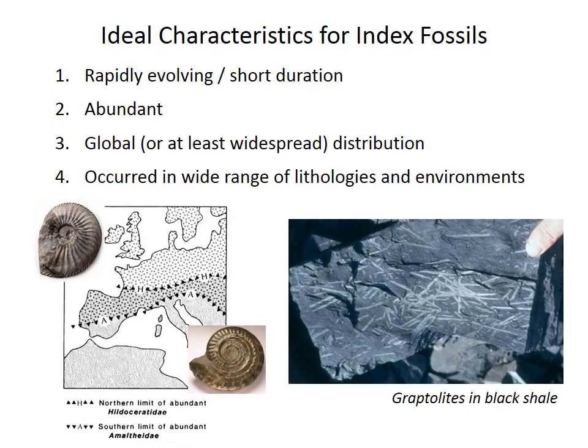What makes a species a good index fossil? First, it should belong to a group that evolves rapidly, so that species have shorter durations. Shorter durations permit subdivision of geological time into shorter intervals, which is better for high-precision correlation. Second, index fossils should be abundant. Correlation is one of the important goals of biostratigraphy, so abundant fossils are more likely to be found reliably in multiple places. Third, a good index fossil should have a global, or at least very widespread, distribution to allow correlations between different places and regions.